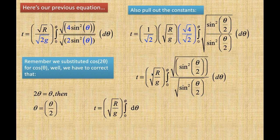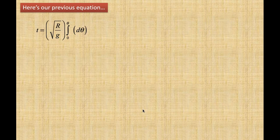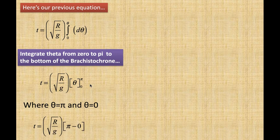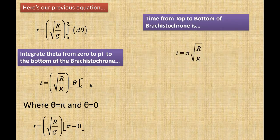That leaves us t equals the square root of r divided by g times the integral from 0 to theta of d-theta. Integrating theta from 0 to pi gives the time from the top to the bottom of the brachistochrone: t equals pi times the square root of r divided by g.